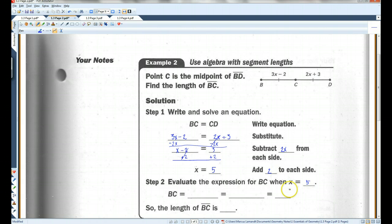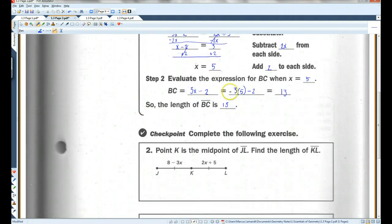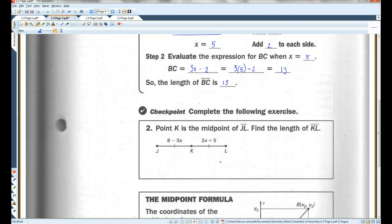But that's not what we're looking for. We're looking for the length of BC. BC is 3X minus 2. So if I plug in 5 for X, I'm going to get 3 times 5 minus 2. 3 times 5 is 15. 15 minus 2 is 13. So the length of BC is 13. This one's very similar. You can pause the video here and try it. Make sure you guys actually do these checkpoint problems because I do grade them.